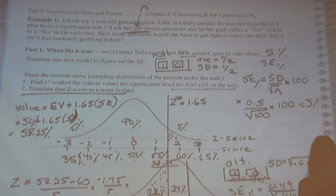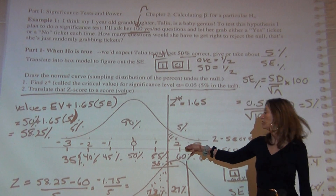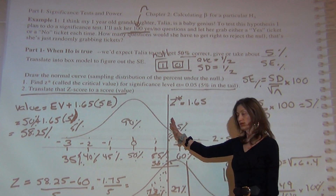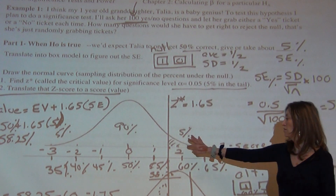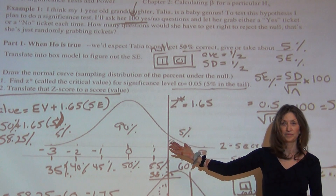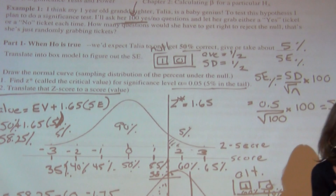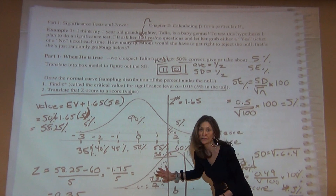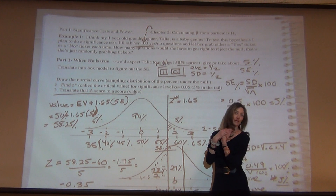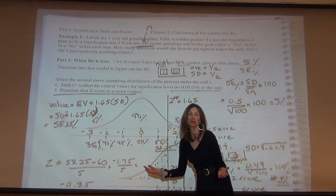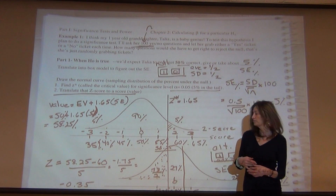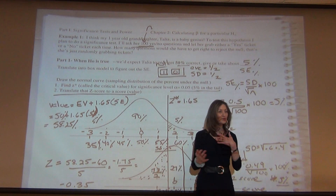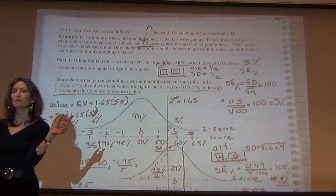There are two types of errors we can always make. One type — called the Type 1 error — is if the null is true and nothing's going on, and we mistakenly draw our cutoff line and say there's an effect when there really isn't one. A false alarm. It would be like a fire alarm going off when there's no fire. The other type of mistake is: if there really is an effect, we could make the error of not detecting it — failing to detect an effect that really exists. That would be equivalent to there being a fire, but the alarm doesn't go off. Both types of mistakes are ones we want to reduce as much as possible.